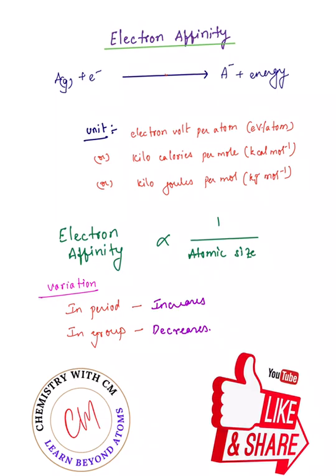Electron affinity is defined as the amount of energy released when an electron is added to an isolated neutral gaseous atom.